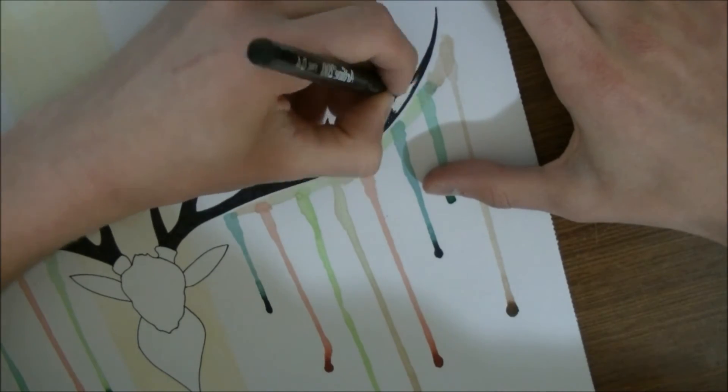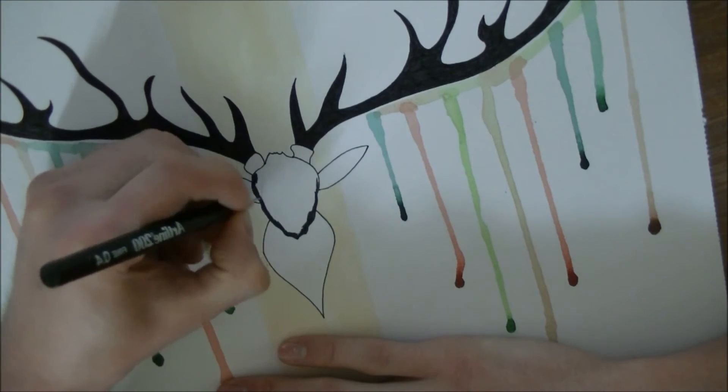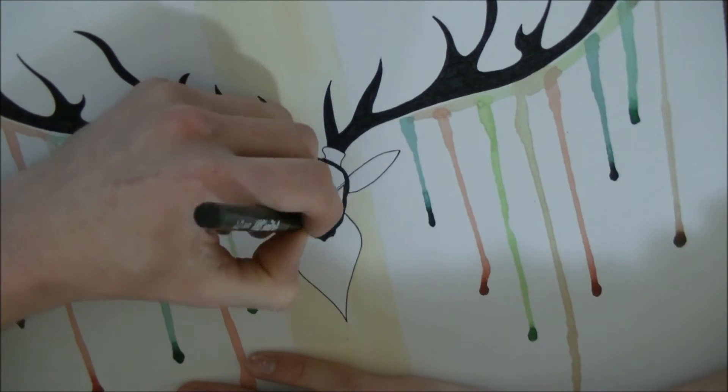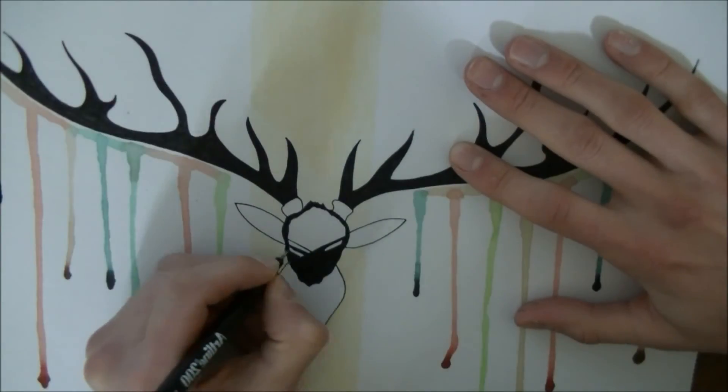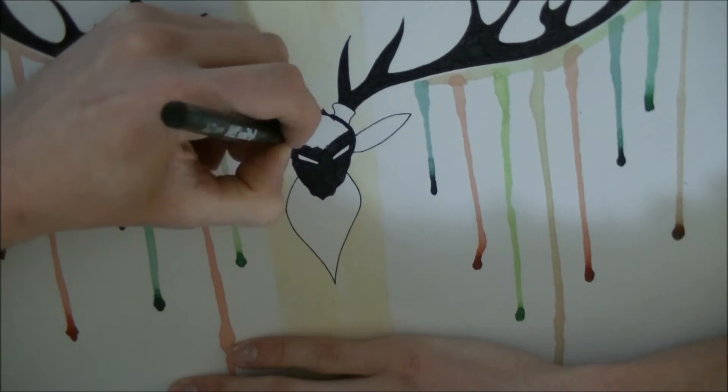The only male deer species which don't grow antlers are the Chinese water deer. The antlers of deer consist of the fastest growing living tissue in the world. The eyes of deer allow them a huge 310 degree view in order to watch out for predators and find food.